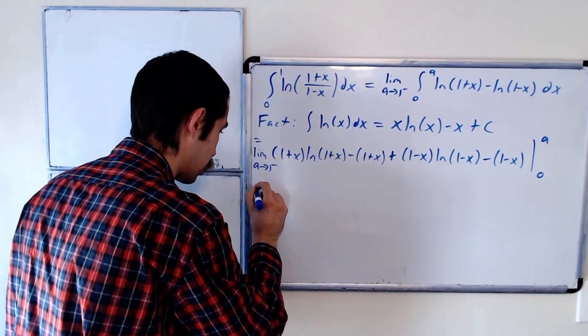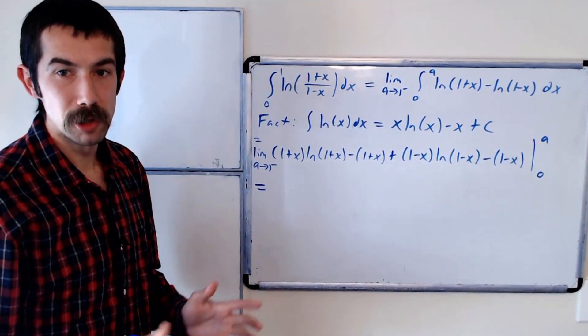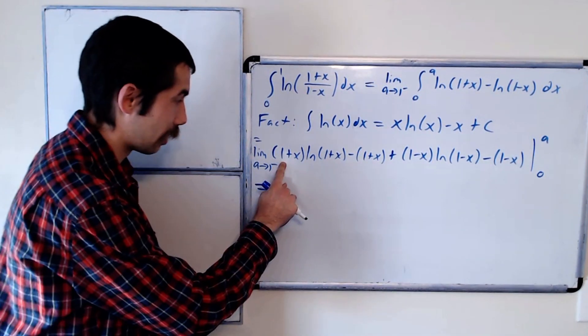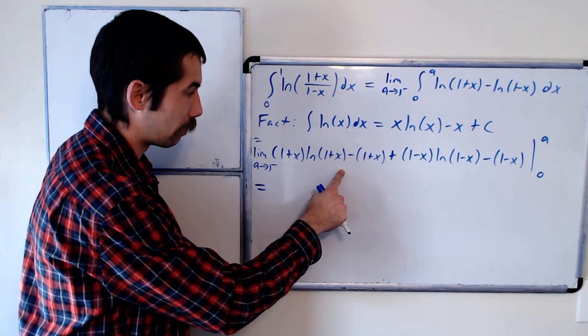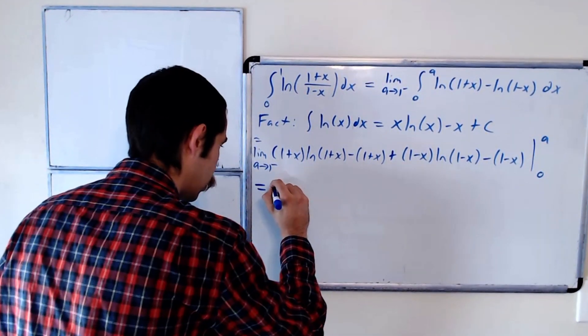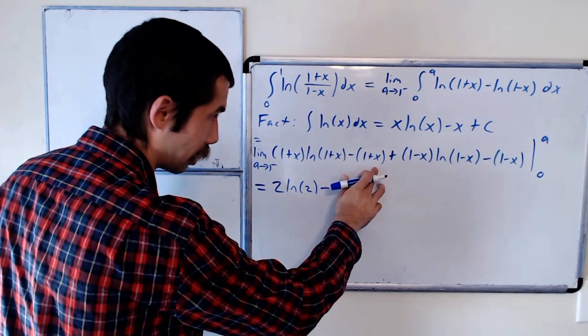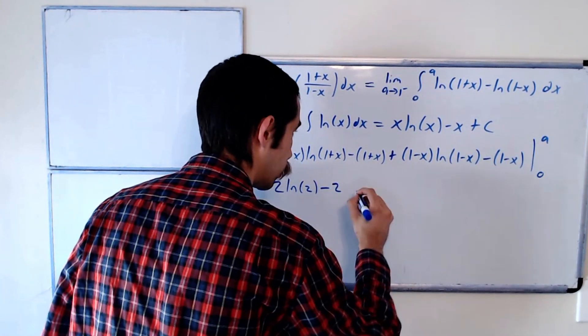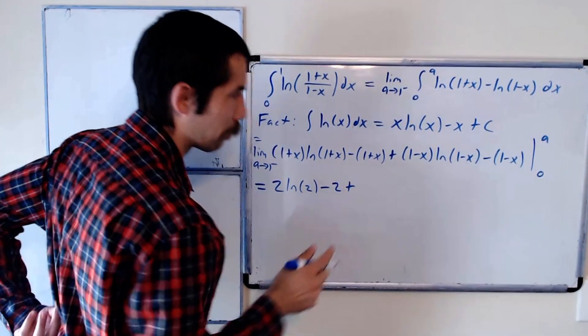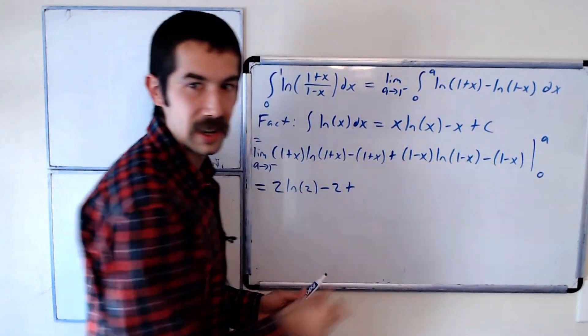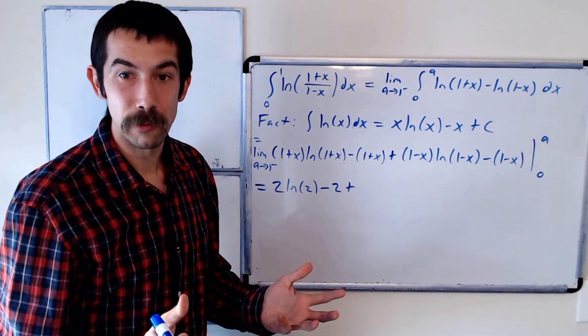In most of these terms, it's fine to just plug in a equals 1. If we plugged in x equals 1, 2 ln of 2, that's fine. Minus x equals 1 would be minus 2. Plus, now if we plug in x equals 1, we're going to get 0 times natural log of 0. So that's an indeterminate form, 0 times infinity.